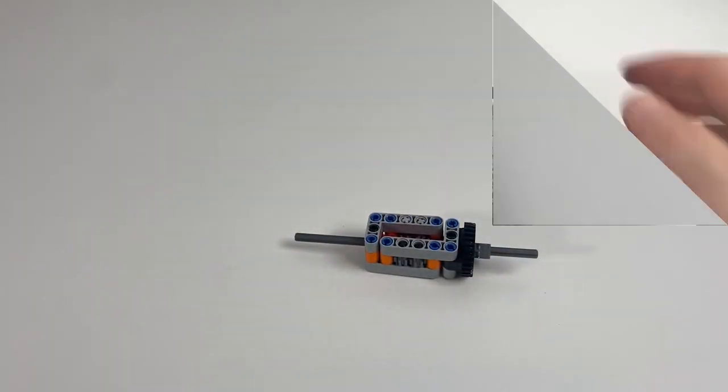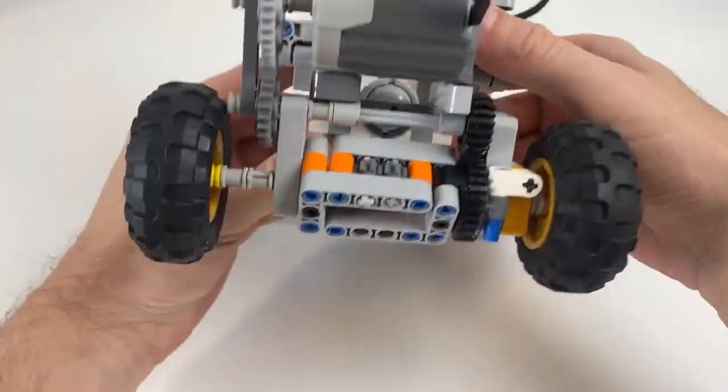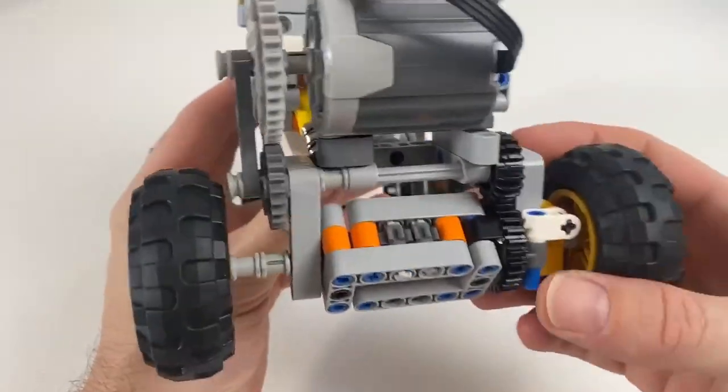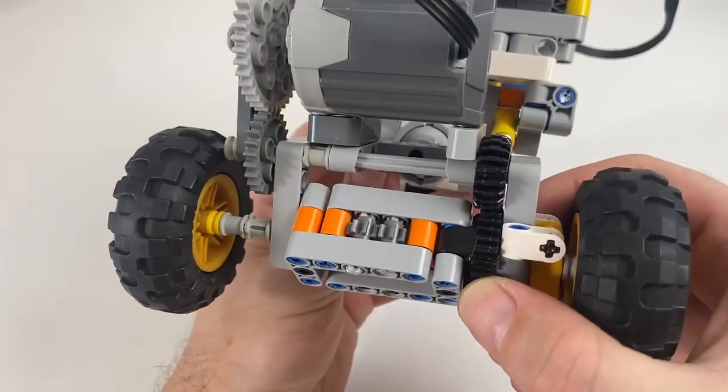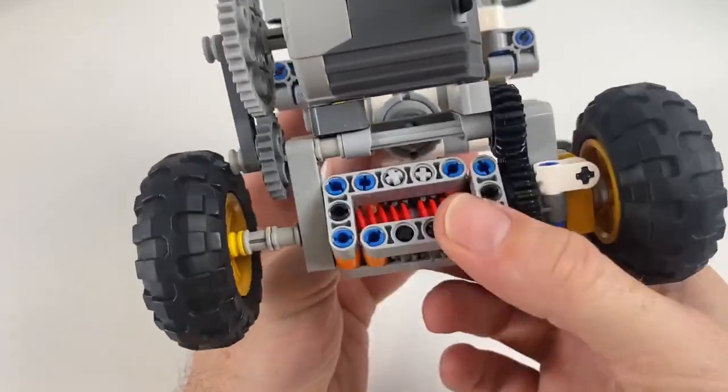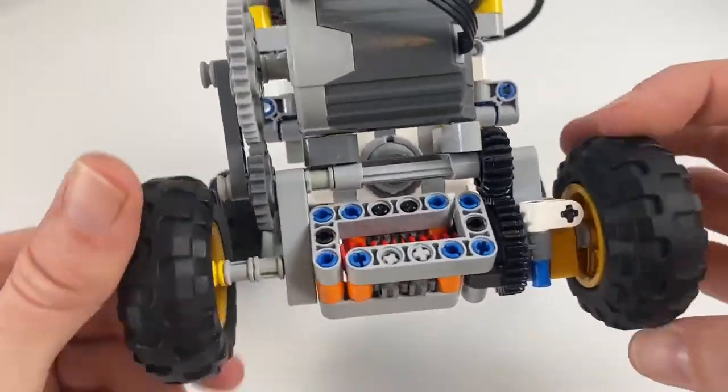So here we've got the example build where you can see this torsion differential in place. Now like with all of these really, it takes up a little bit more space than the standard one, so you do have to compensate for that. And this is really just one of like an infinite number of ways that you can integrate this into a system. This is a particularly easy way and it takes advantage of the turntable.